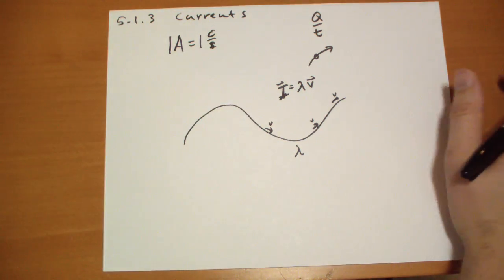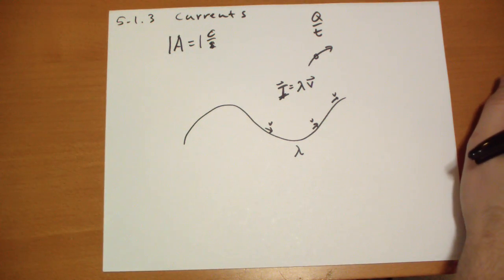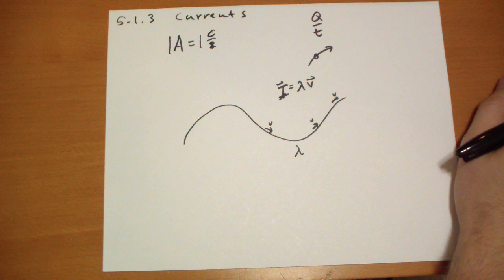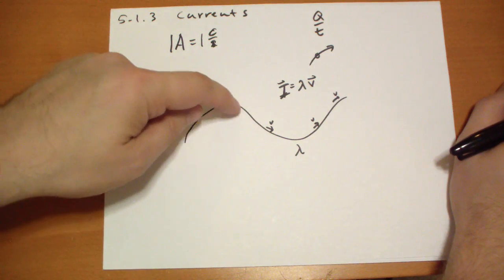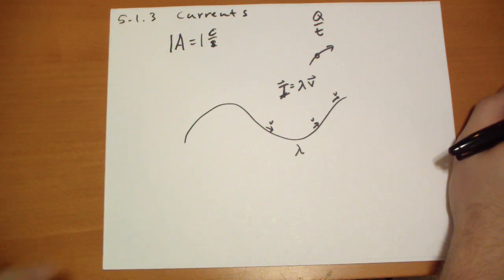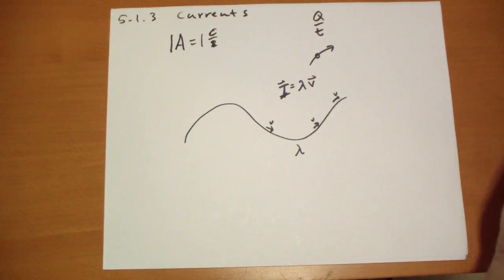So it is a field, just like the charge density fields, rho. It has a vector, it has a direction at every point in space. It could be zero, like there's no charge flowing here, so the current here is zero. But over here, the current flowing this way is how much ever density is on this line, and how much ever is moving.